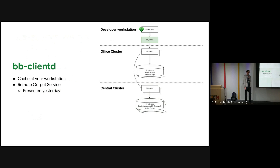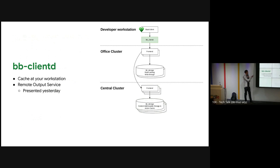If you want even more caching, you can add bbclientd — there was a talk yesterday about the remote output service. You can add bbclientd on your own workstation, so when you build something from different workspaces on your machine, you can use that local cache instead.